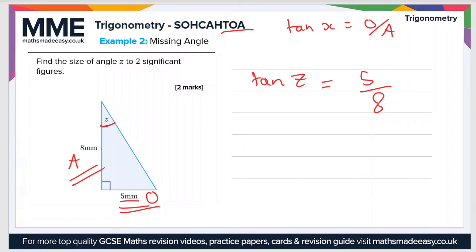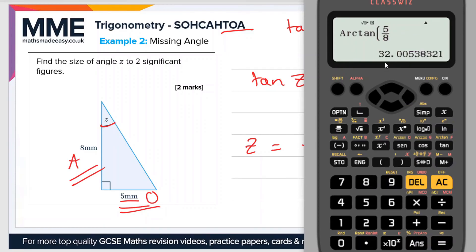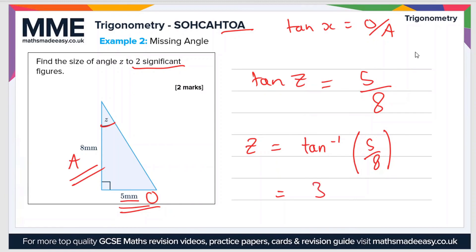So if tan z equals 5 over 8, we need to use the inverse tan function to find the value of z. We can write that as z equals tan to the minus 1 — the inverse tan function — of 5 over 8. To get the inverse tan on a calculator, press shift and then tan. Sometimes it'll say arctan, sometimes tan to the minus 1, depending on your calculator. Putting in 5 over 8 gives us a value of 32.005, or to two significant figures, the angle is 32 degrees.